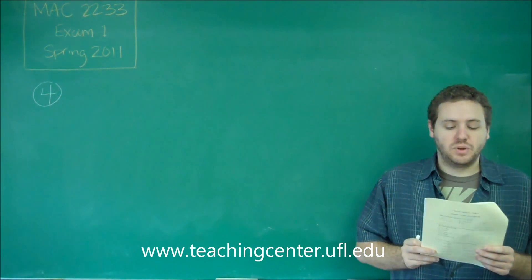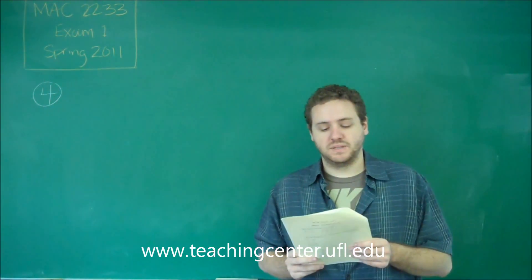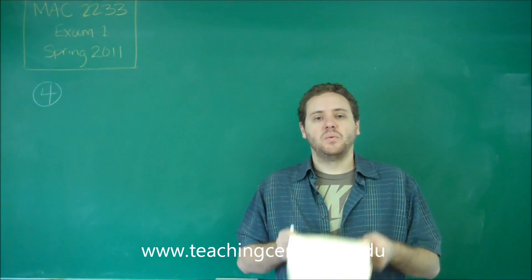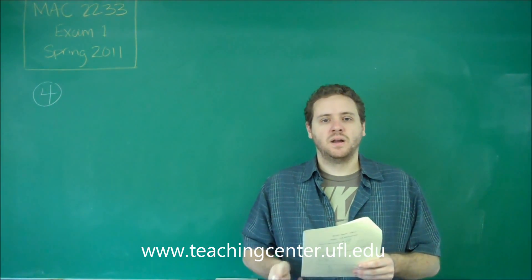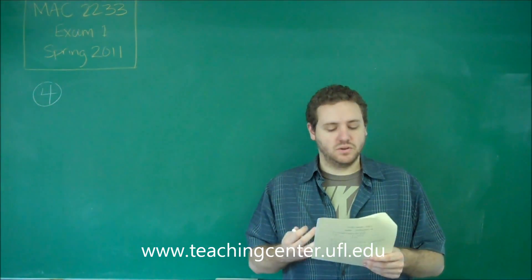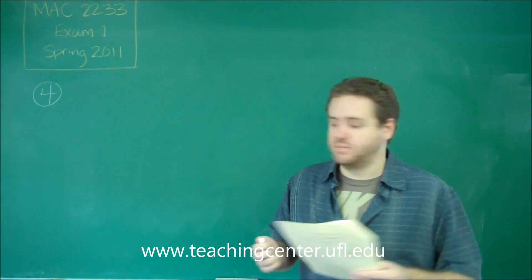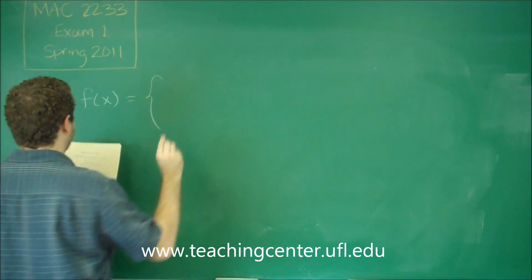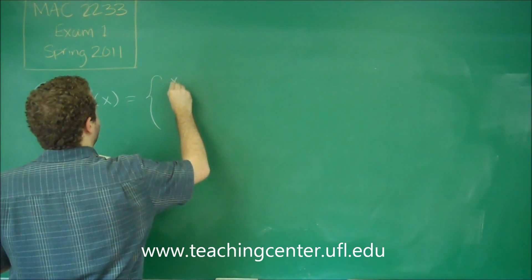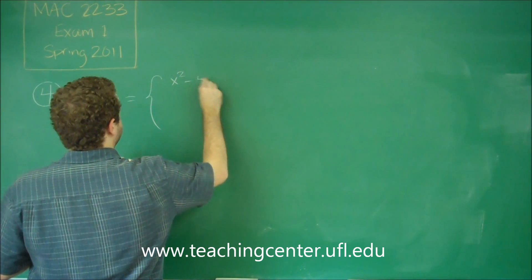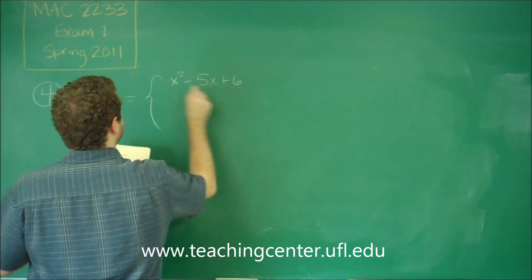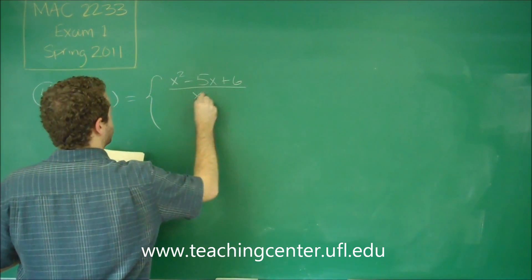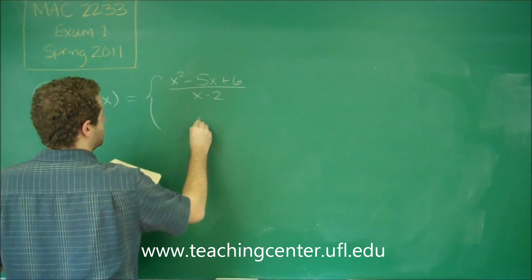So to check the limit as we approach two, which is what this problem says, from both the left and the right, we need the piece of the function that includes those, which is not the second piece. So be careful about that, because it seems like that's the case, but it's not. So we have x squared minus 5x plus 6, all over x minus 2. The other piece is just 4.